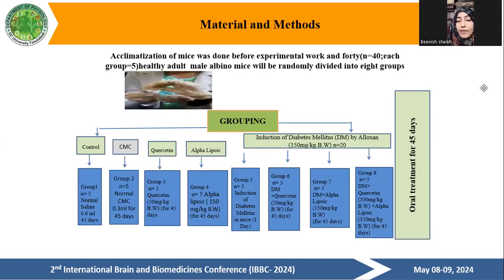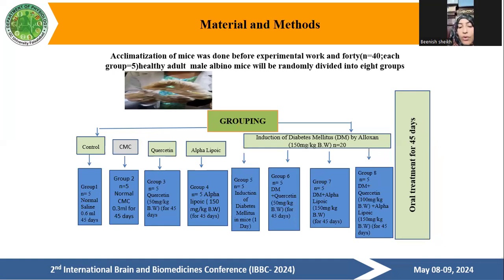Materials and methods. Acclimatization of mice was done before experimental work. Forty healthy adult male mice were randomly divided into eight groups. Group one: control group, normal saline 0.6 ml for 45 days. Group two: CMC.